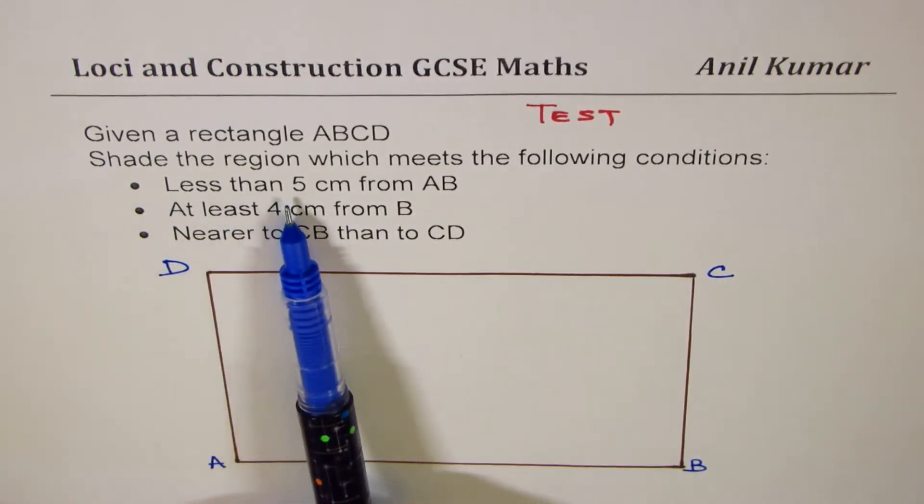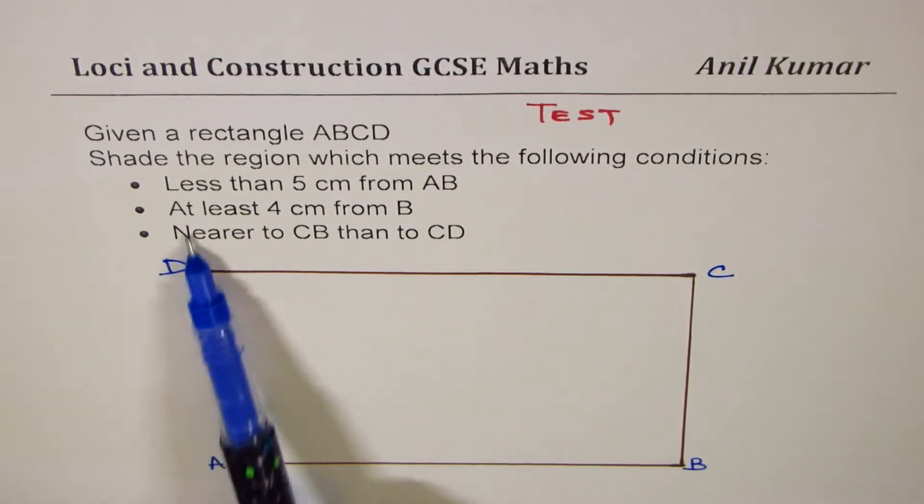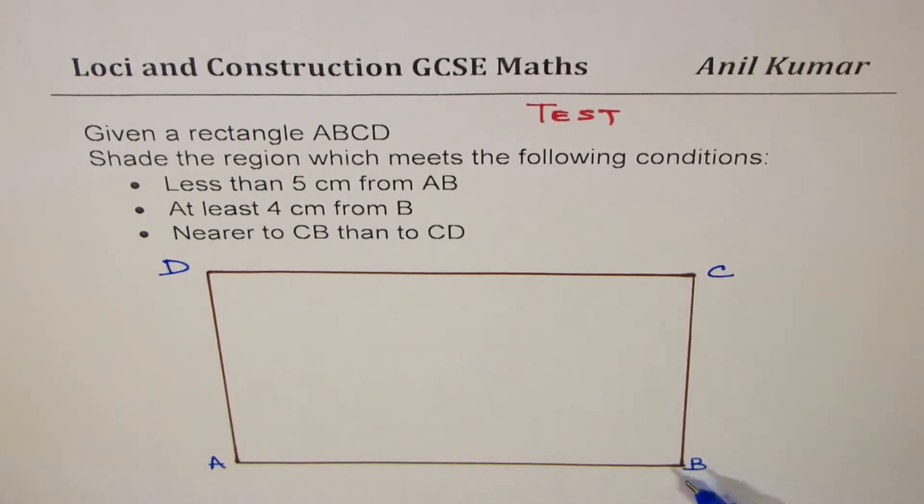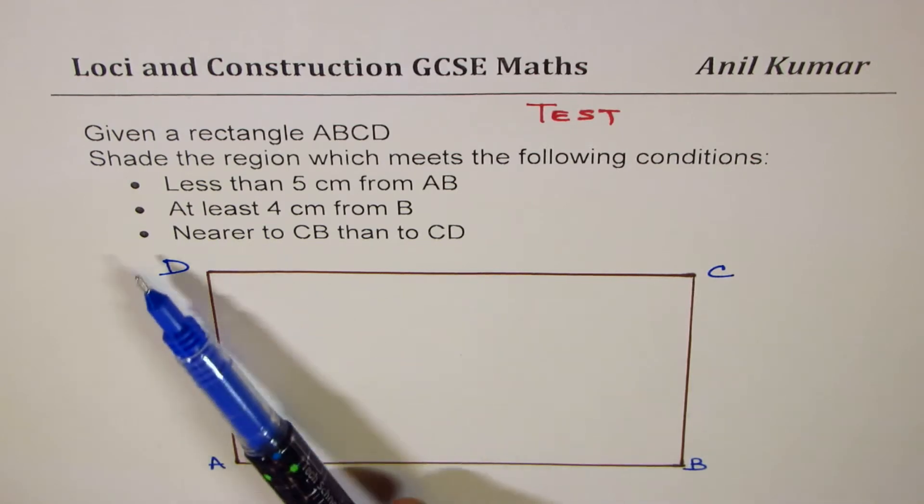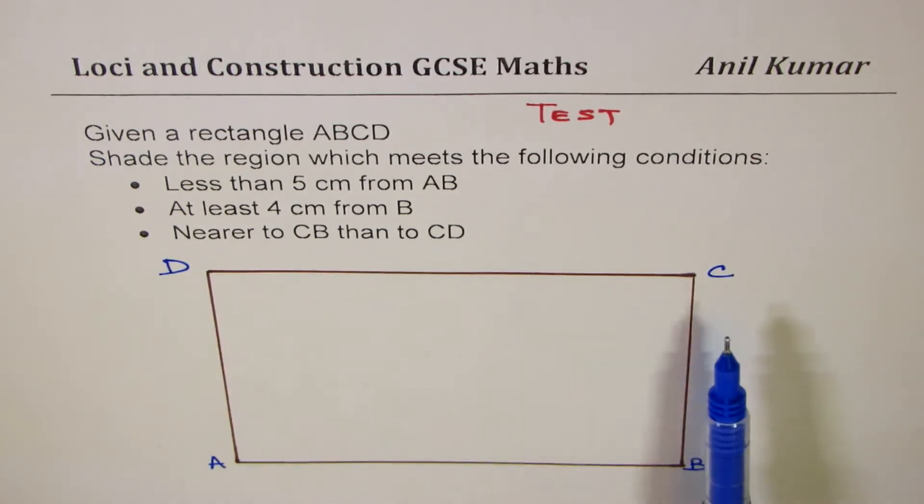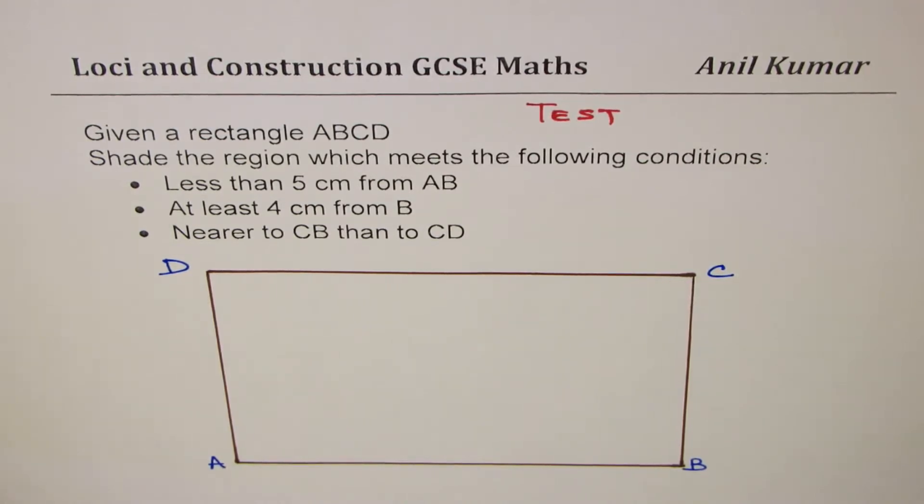Less than 5 cm from AB, at least 4 cm from B, and nearer to CB than to CD. So nearer to this side than that side. So that is the question for you. Let us see how to solve such a question.